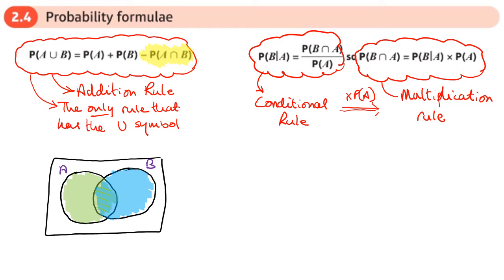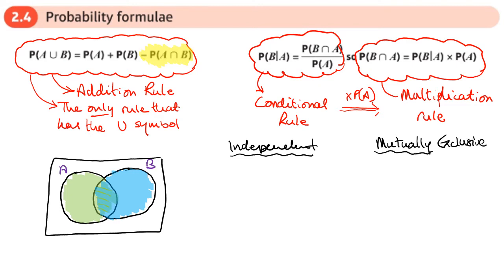What I want to do quickly is see what happens to these rules when we have things that are independent or mutually exclusive. When things are independent, the probability of A and B equals the probability of A times the probability of B. If things are mutually exclusive, the probability of A and B is 0.